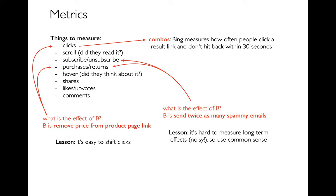There are some lessons here from Ron's talk. The lesson about this pipeline is that while it's really easy to shift links forward and back, it's harder to actually come up with a change that improves purchases. In terms of these spammy emails, it's really hard to measure long-term effects because it's noisy — lots of other things come into play — and so you have to be using common sense as well. Don't unthinkingly follow the metrics.